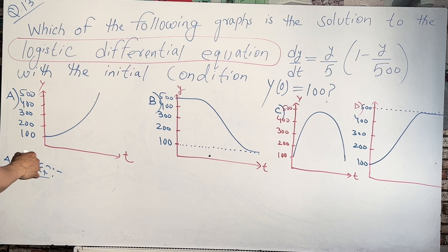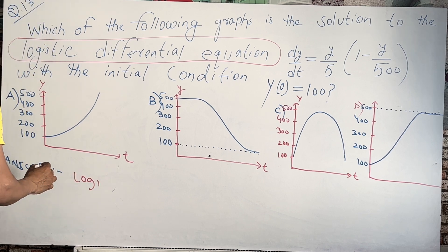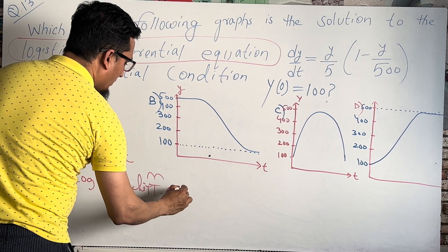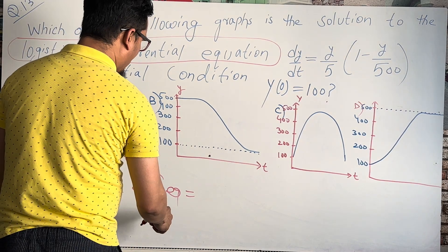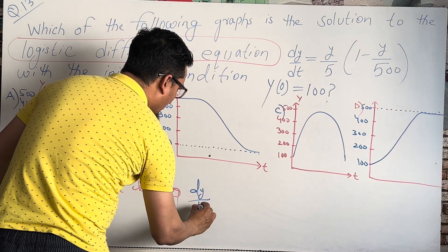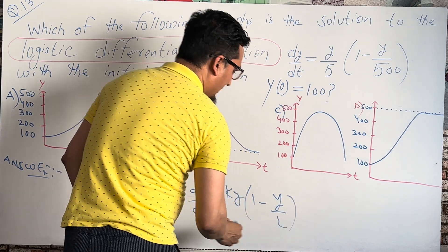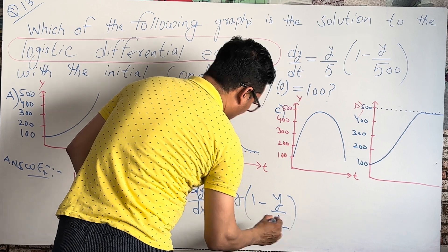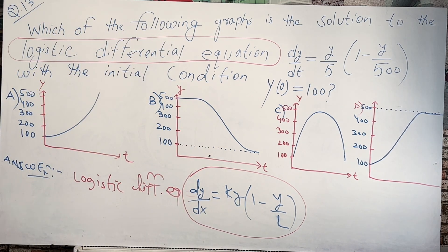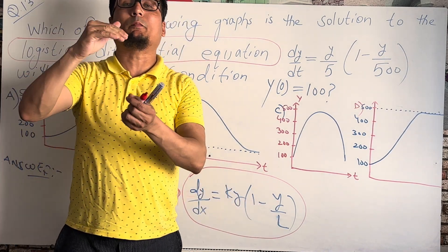I'm going to write down the logistic differential equation. The equation is: dy/dx = k·y·(1 − y/L). This is the differential equation of a logistic equation. Here, L is the maximum capacity — the maximum value the function can reach.